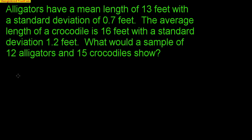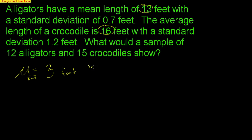The first thing we have to think about is what we expect the difference to be — the expected difference between alligators and crocodiles. Crocodiles are 16 feet and alligators are 13 feet, so we expect there to be a three-foot difference. That three-foot difference is in favor of crocodiles — crocs are supposed to be three feet longer. Now, what about the standard deviation for that difference?